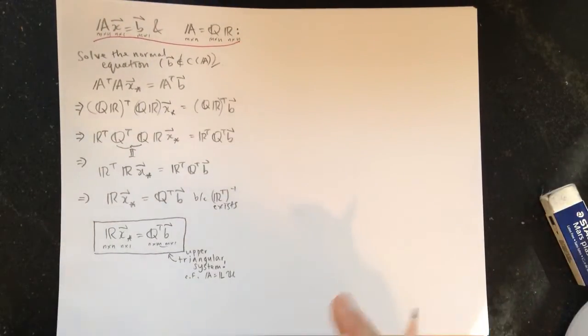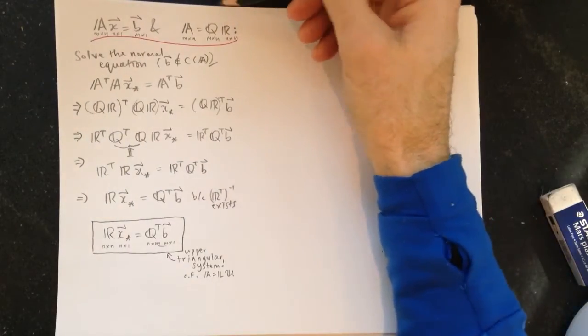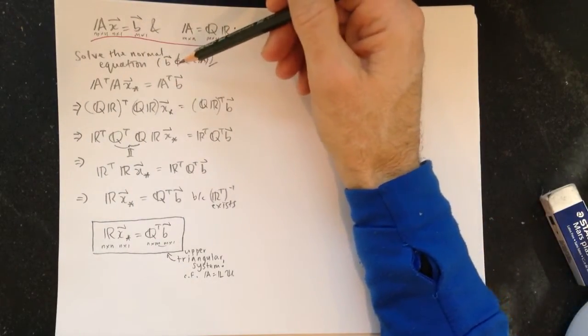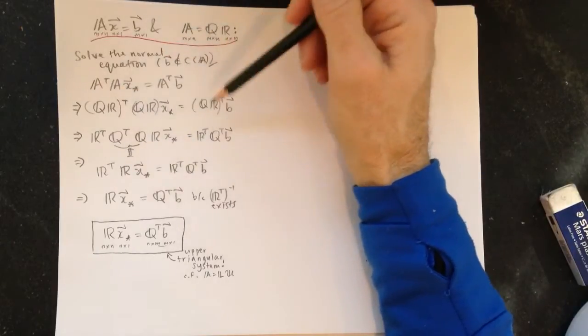So we have a question here about using A equals QR, QR decomposition to solve AX equals B, and why we couldn't do it in a more straightforward fashion than going through the normal equations.